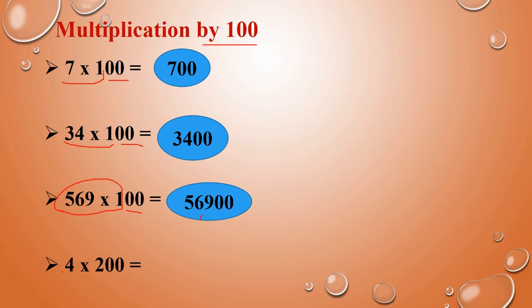Next: 4 into 200. So 4 into 2 — the answer is 8. There are 2 zeros, so we have to add 2 zeros. So the answer is 800.